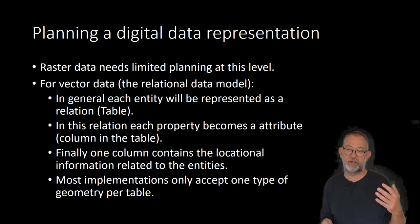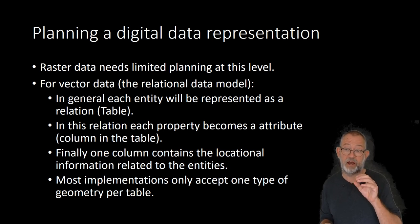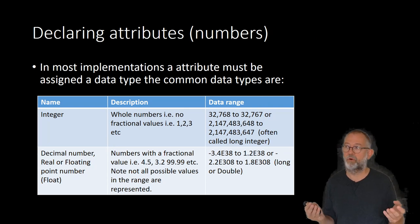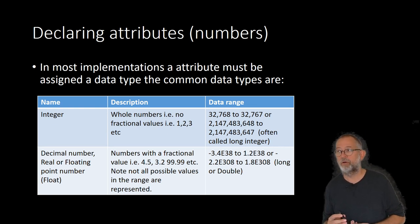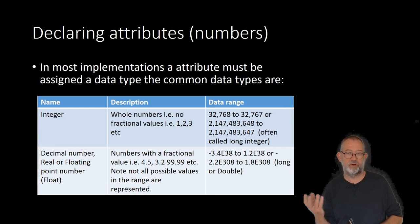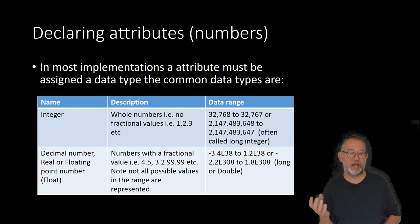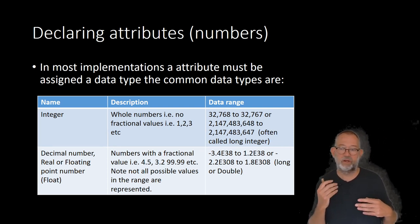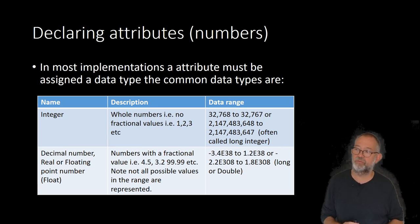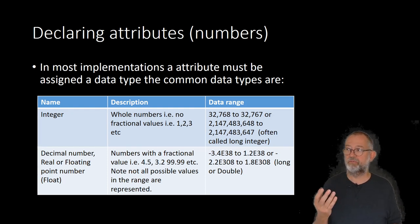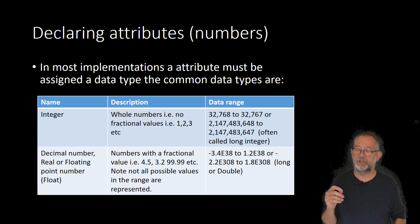Each type of attribute we work with has to be of a specific data type. So when we decide that the property height has to be represented by an attribute called 'height', we need to decide what data type that attribute will be. There are around five or six typical data types, though in reality there are many more depending on the implementation. In main terms, there are integers — whole numbers with no fractional values, so 1, 2, 3, not 1.6.